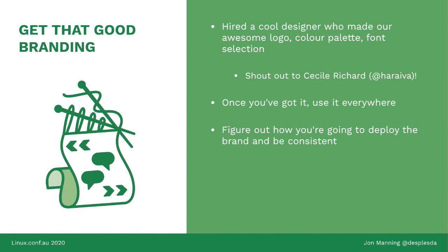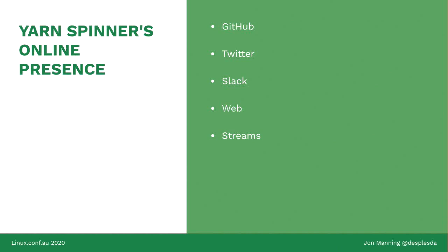That meant we had to figure out our branding. We hired a really cool designer to make our awesome logo, our color palette, and our font selection — big shout-out to Cecil Richard, who made our amazing logo, hire them, they're great. Once you have something you can attach the project to visually, use it everywhere and use it consistently. Figure out how that brand is going to be deployed and be consistent with it. We also figured out how we're going to deploy Yarnspinner in terms of its online presence. There are five main pillars: GitHub, Twitter, Slack, the web, and our live streams.